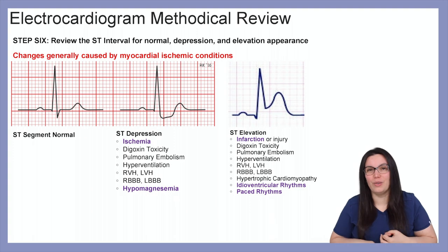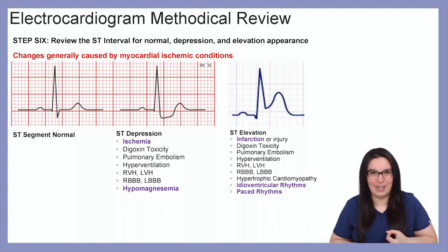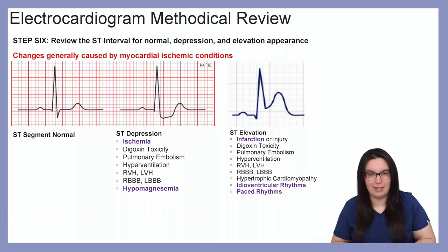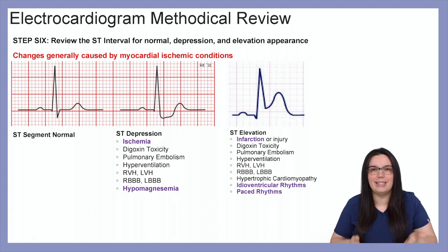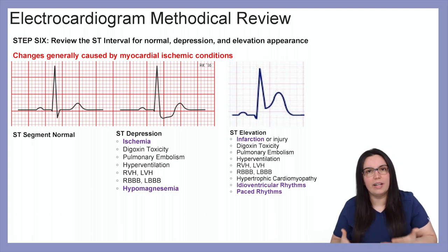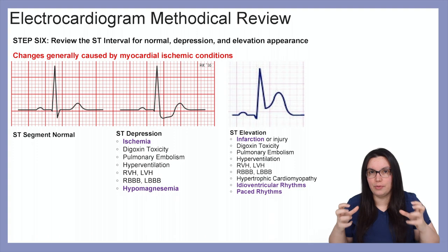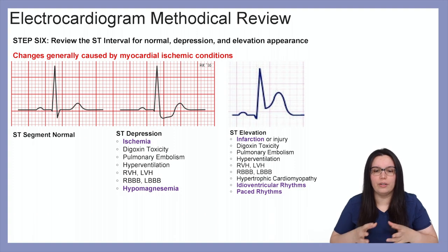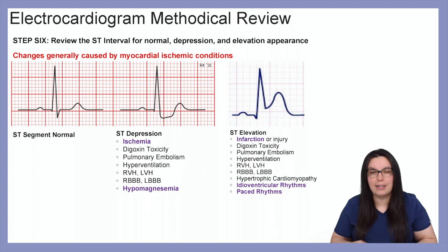Step six: review the ST interval for normal, depressed, or elevated appearance. Changes to this ST segment are generally caused by myocardial ischemic conditions. A normal ST segment serves as the baseline. ST depression — where the isoelectric line dips down — is primarily caused by ischemia, but also digoxin toxicity, pulmonary embolism, hyperventilation, right or left ventricular hypertrophy, bundle branch blocks, and hypomagnesemia.